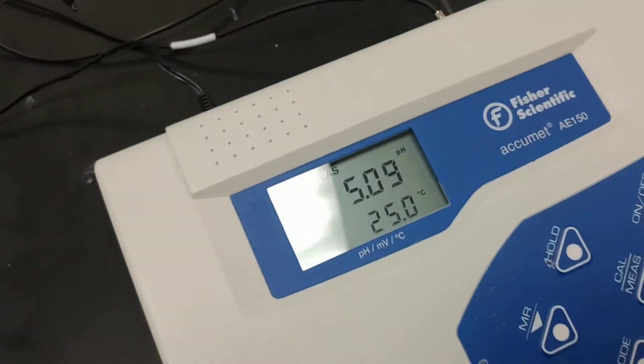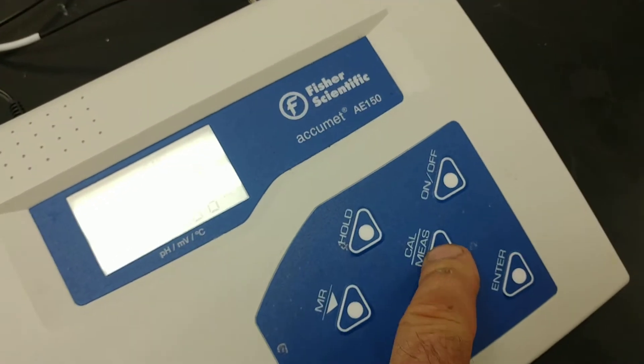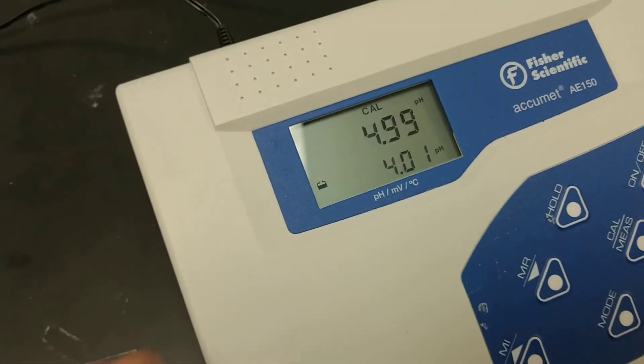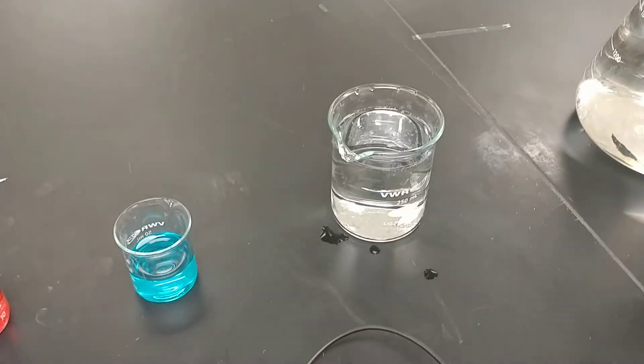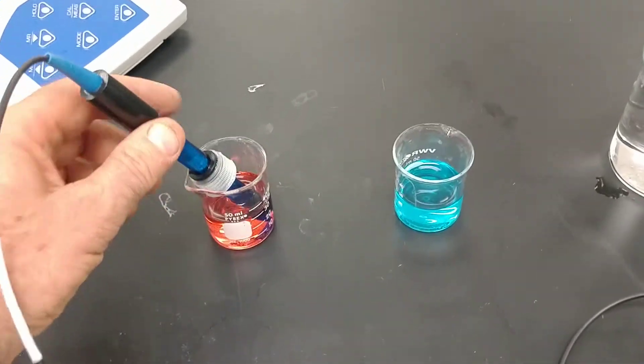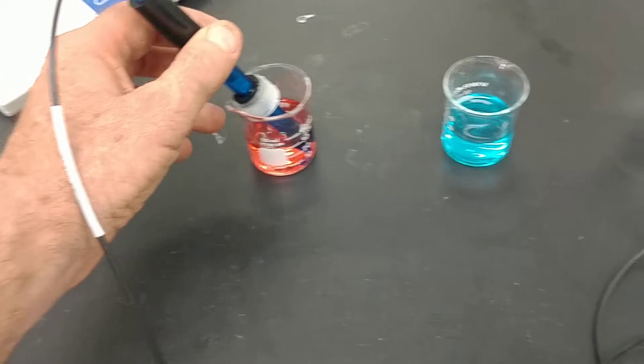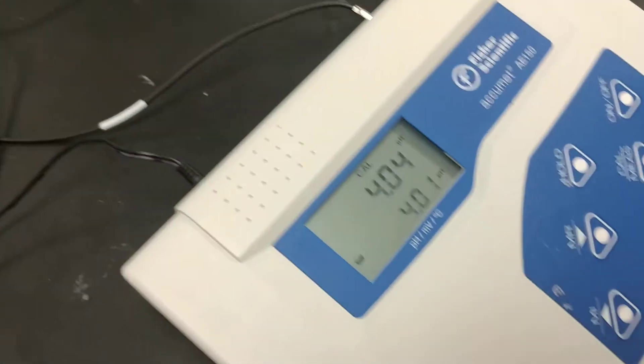Alright, let's get busy calibrating. We're going to punch the calibrate button. Now notice this thing is thinking that it's pH 4. So I'm going to go ahead and put that in, give it a little stir there.